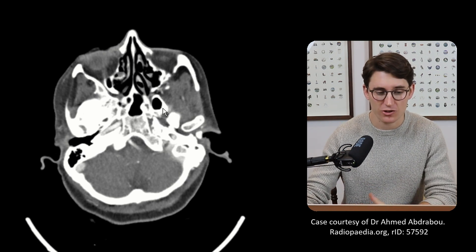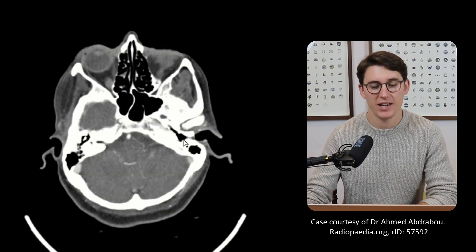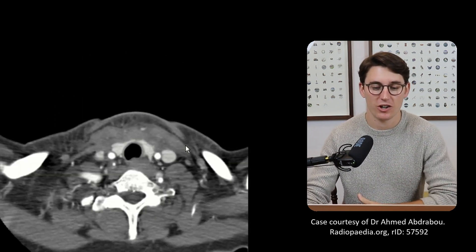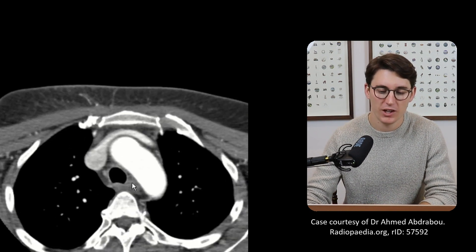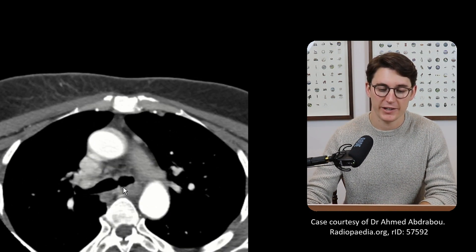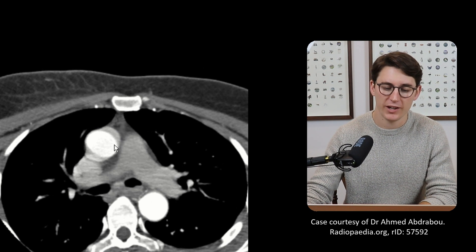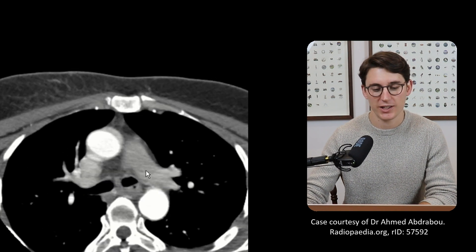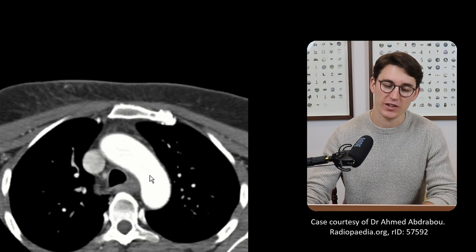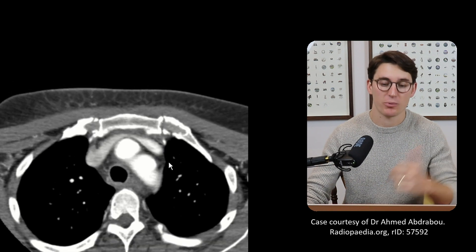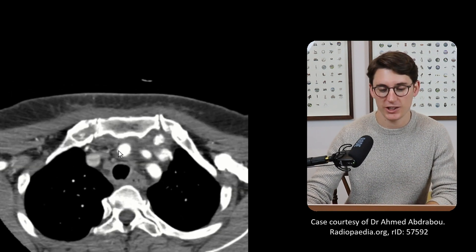So here we have an axial contrasted arterial phase CT. I want to scroll right down in the chest — we're going to start at the heart and work our way all the way up. We follow the trachea down; it should bifurcate here at the carina. Here we can see our pulmonary trunk, our ascending aorta, and our descending aorta. As we work our way up, we'll see the arch of the aorta starting to form. Now we know that there are three branches that come off the aorta.